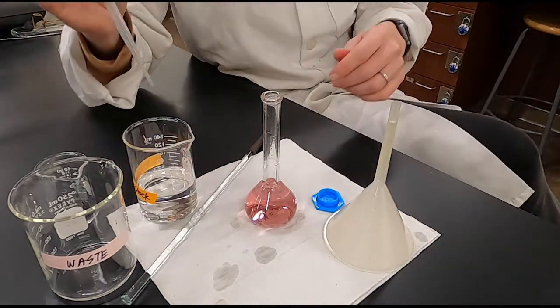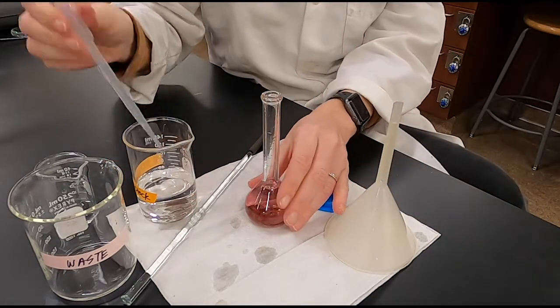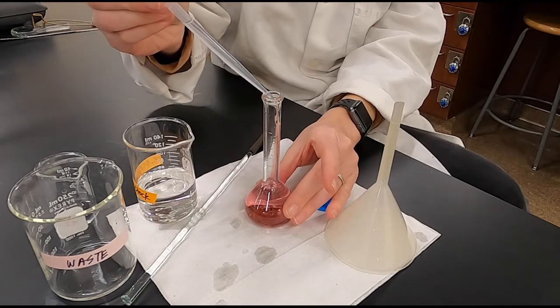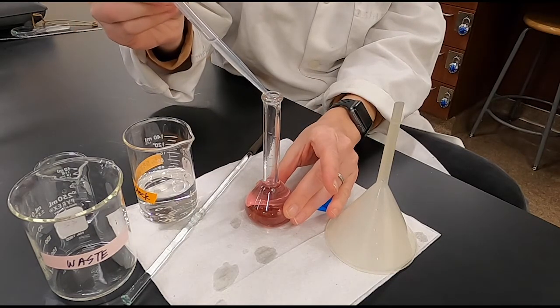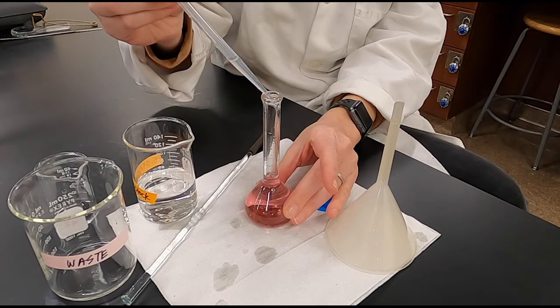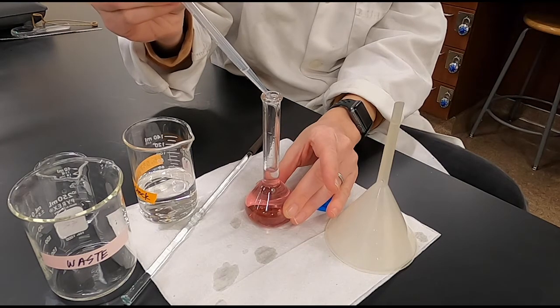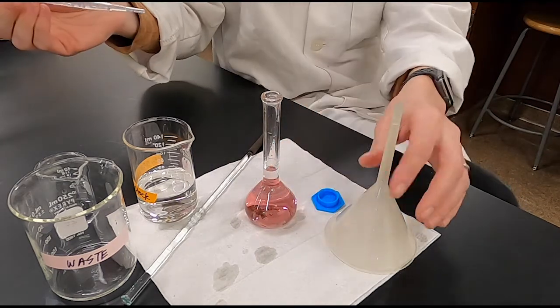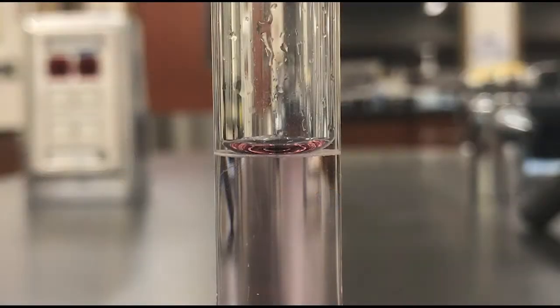Once you get close to the calibration mark, you do want to slow down and be careful by using a barrel pipette. When you get really close to the calibration mark, you want to add the solvent drop by drop while looking at the meniscus at eye level to make sure that it lies right on the calibration mark. Mix thoroughly for several minutes by inverting.